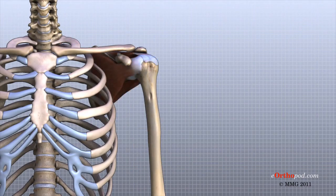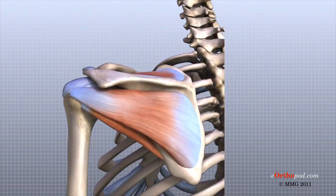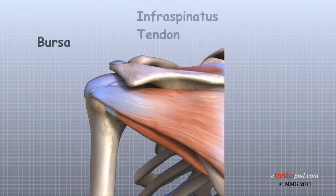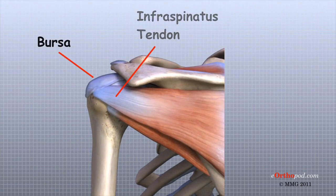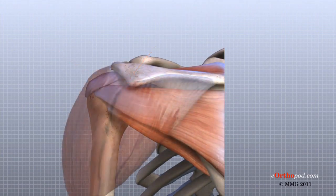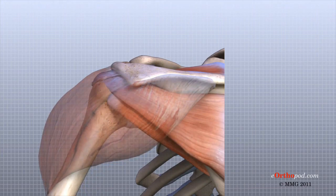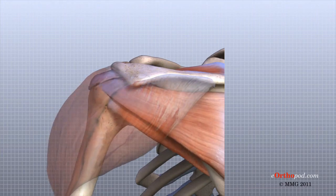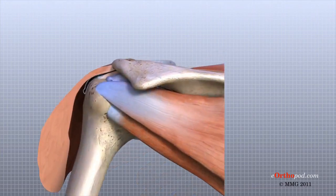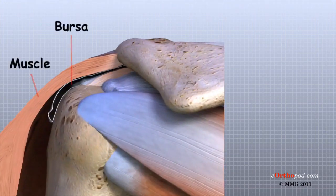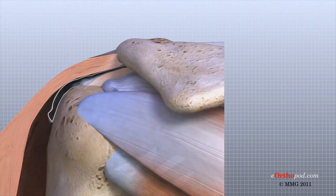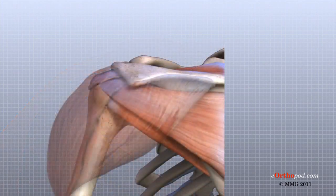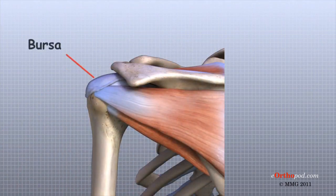Sandwiched between the rotator cuff tendons and the deltoid muscle are structures known as bursa. Bursa are found everywhere in the body, wherever two body parts move against one another and there is no joint to reduce the friction. A bursa is simply a watertight sac between two moving surfaces that contains a small amount of lubricating fluid.